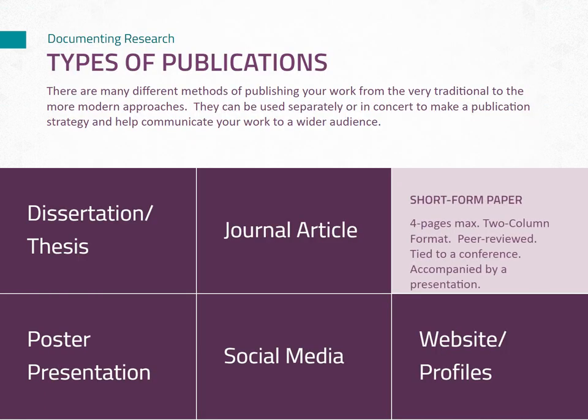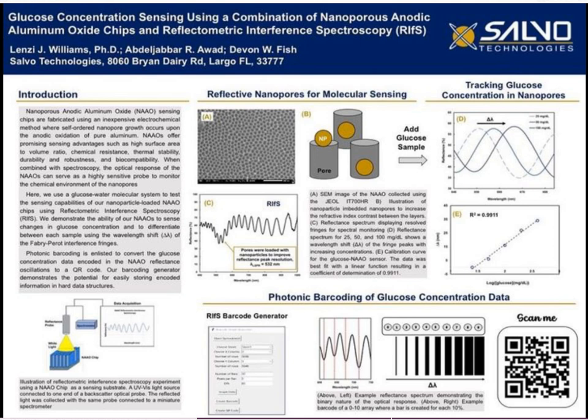Conference papers are short papers, a maximum of four pages, in a two-column format. They are also peer-reviewed but tied to a specific conference instead of a journal, published in conference proceedings. Conference papers are typically accompanied by a conference presentation. A note of warning: be careful not to duplicate publications. You can't publish the same results as a seminal finding in both a conference paper and then a journal article. Poster presentations are also tied to conferences; there is minimal writing required, and they are a great way to present and share research and progress.